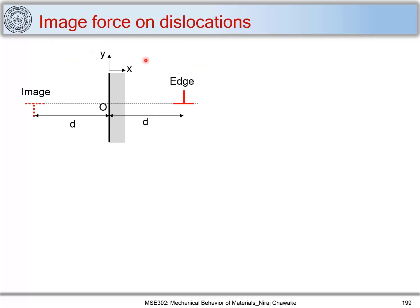Now let's look at the case of an edge dislocation. You can use a similar scenario: find the stress field around the edge dislocation, determine which component of stress causes the glide force on the glide plane, and find the image force due to the image dislocation on the edge dislocation. The final answer you will get is f_x = −Gb²/(4πd(1 − ν)). I leave it up to you to work this out.